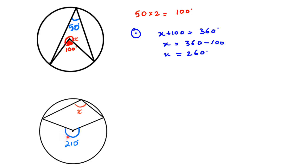Now we have been given the angle at the center and we have to find angle x. Even though it looks different from the other angles we have solved, it's still the same thing — we have the angle at the center and we want to find the angle at the circumference, and they are both starting from the same chord. So x is going to be 210 divided by 2, which is 105 degrees.